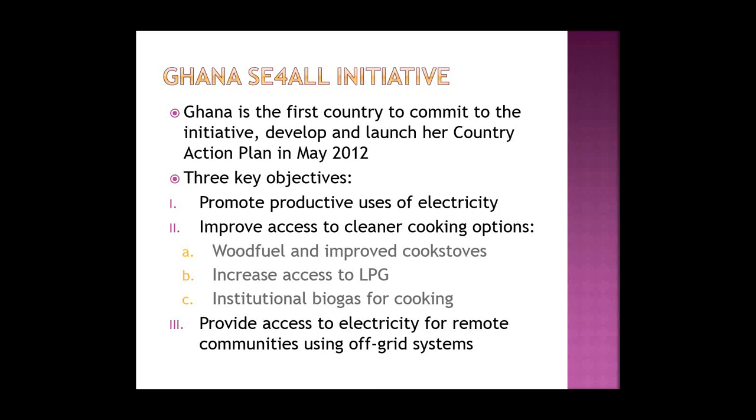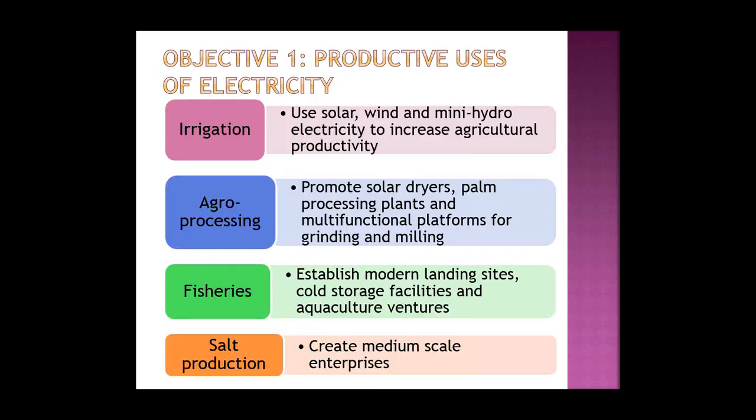The third strategic objective is to provide access to electricity for remote communities using off-grid systems. Looking at the first objective — productive uses of electricity — Ghana is focusing on key economic sectors and their contribution to GDP, particularly using energy to increase agricultural productivity through irrigation using solar, wind, mini-hydro, and other resources.